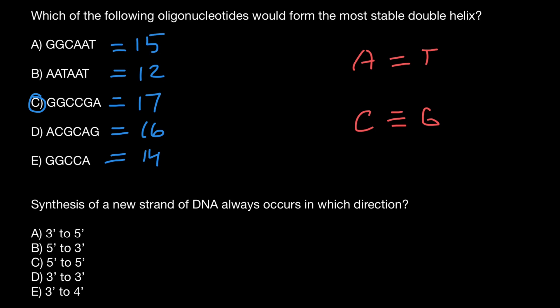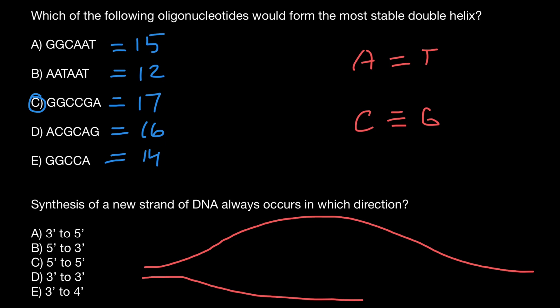And the next question: synthesis of a new strand of DNA always occurs in which direction? Here are the variants of the answers. Take a look. Let's say this is double-stranded DNA, and here's the replication bubble. Somewhere in the middle the synthesis of the new strand of DNA would happen, and it would happen on both strands of the DNA. Let's say we have 3' and 5' here.